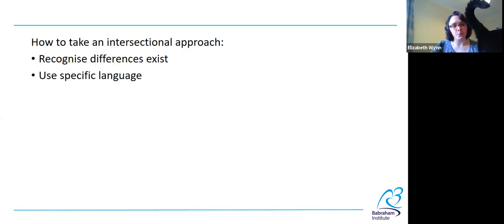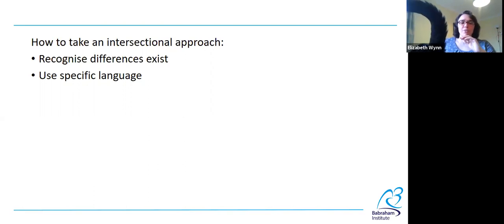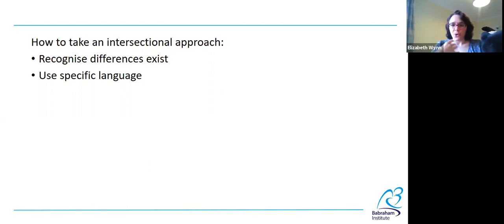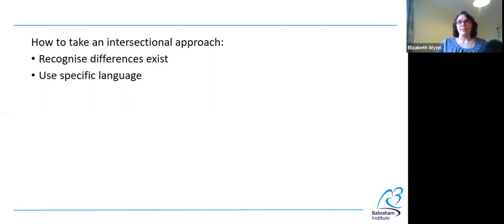Leading on from that, use specific language. As scientists, we've all seen how this can go wrong — a news headline says 'wonder drug slows aging,' and you look at the actual paper and it says 'this drug in this specific cell line results in reduced expression of this specific marker of aging.' It's a different thing. By that same token, be specific with the language you're using when talking about equality issues. If you say 'this is a women's issue,' is it actually, or is it an issue for people with children or people with caring responsibilities more generally? Think about what exactly you're implying with the language you use and whether you're making assumptions about what is or isn't a universal experience for a specific group.